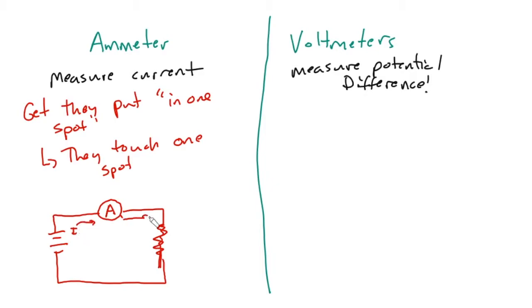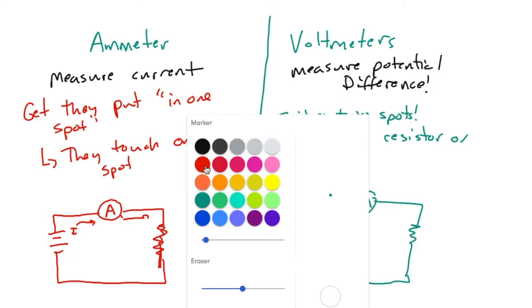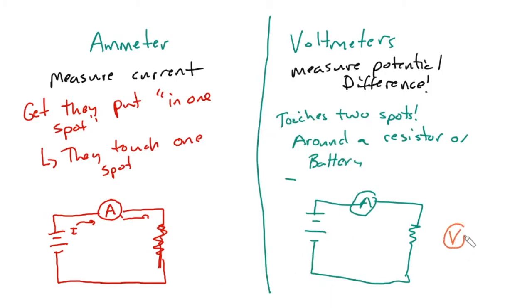All right, where a voltmeter—a voltmeter gets put around a resistor in two spots. All right, around a resistor or a battery, and here's what I mean by that. If I look at that same circuit which has an ammeter placed in series and here's my R, a voltmeter, which is shown with the V, has to come out and touch two spots. So here's spot number one and here is spot number two, and it's on either side of an R.